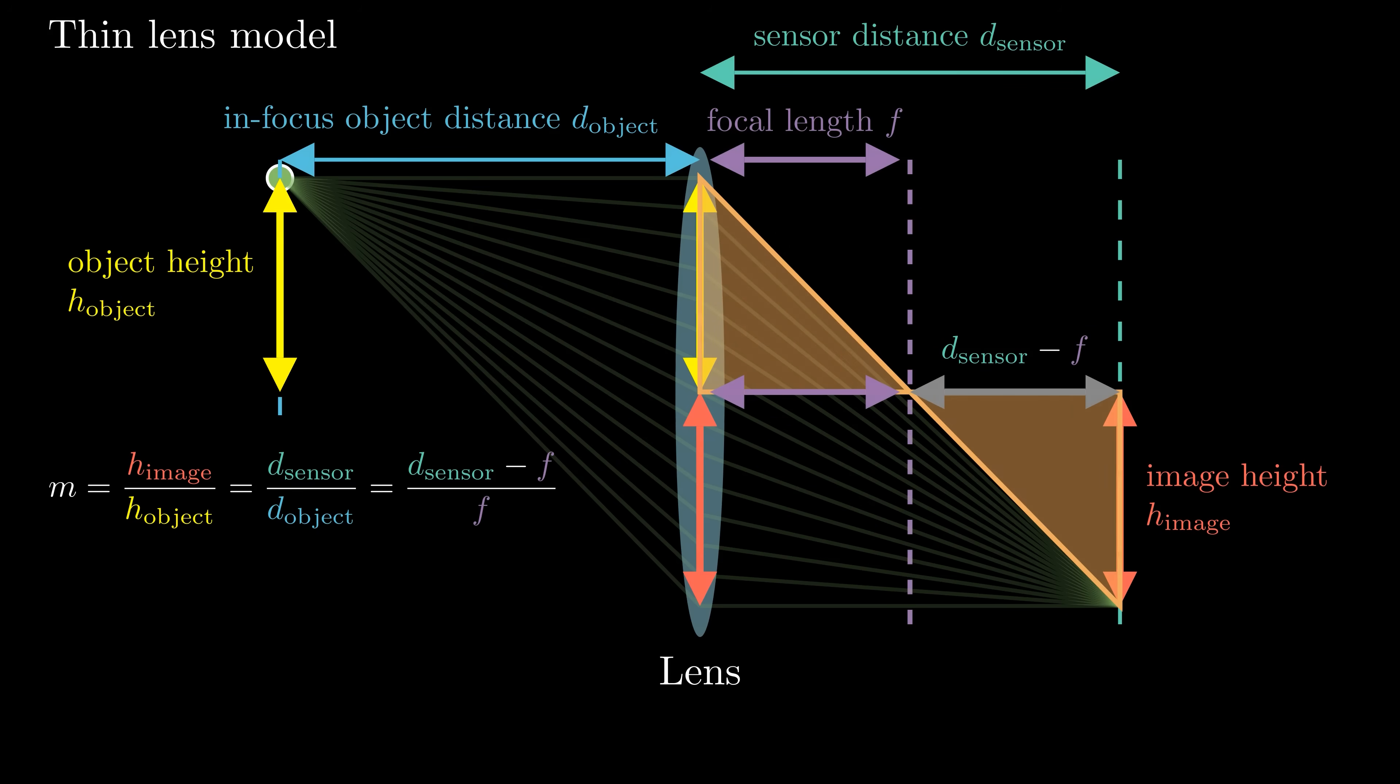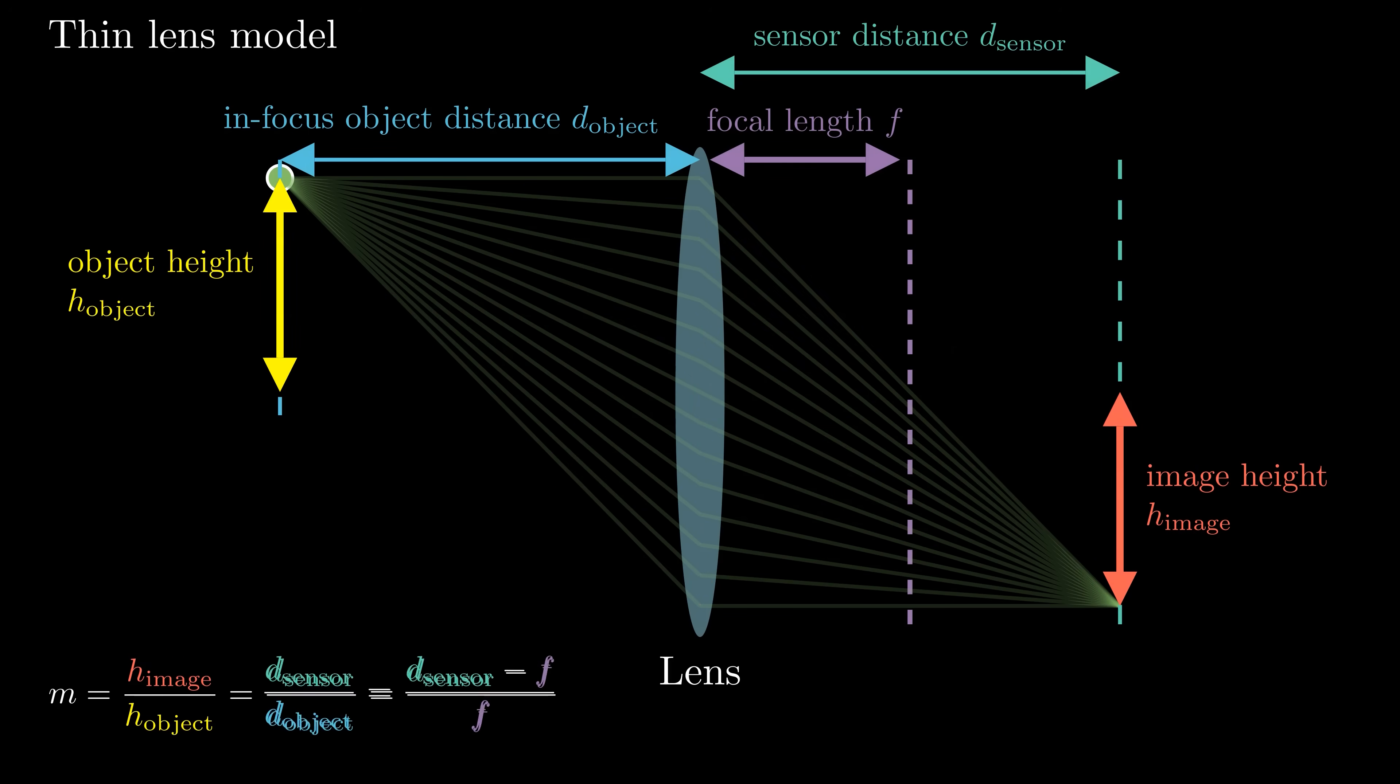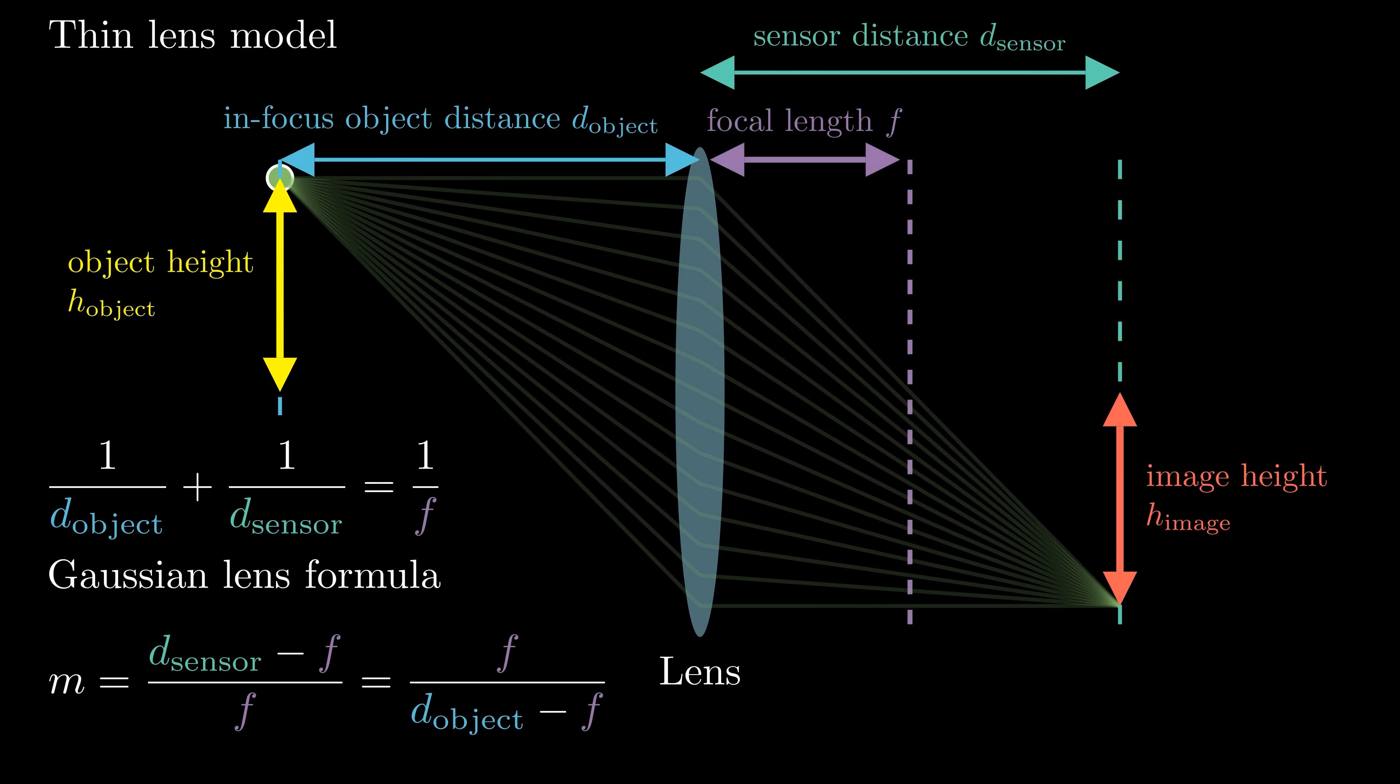We can now derive the formula that relates the in-focus object distance, the sensor distance, and the focal length of the lenses. This is known as Gaussian lens formula. It tells us how changing the sensor distance affects the position of the focus plane. From this, we also know how to compute the magnification using the object distance.